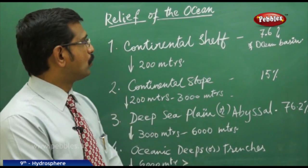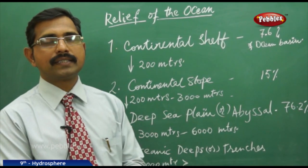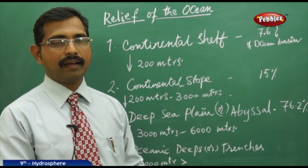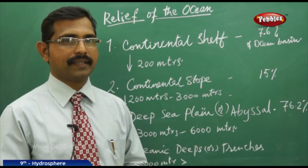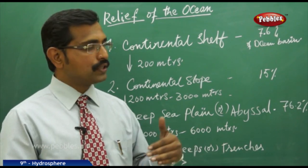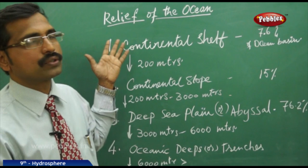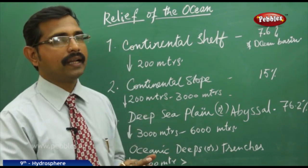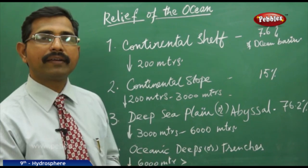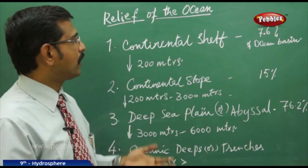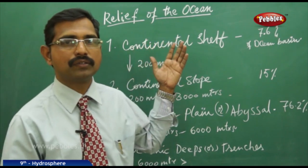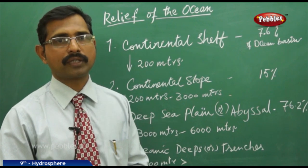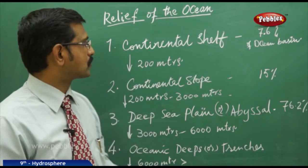Today we will understand the relief of the ocean. An ocean basin is almost similar to a continental basin — just as we have ridges, plateaus, plains, and valleys on land, the ocean floor has similar features such as submarine ridges and plains. The ocean basin is usually divided into four parts.